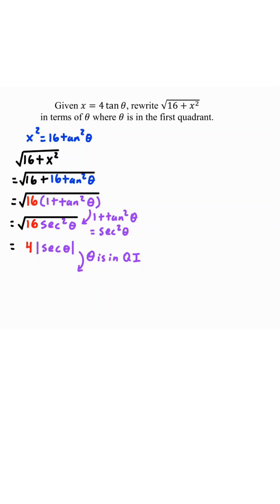However, since theta is in quadrant 1, then secant of theta is always positive, meaning the absolute value is pointless. So the absolute value of secant theta is just secant theta. This narrows down to 4 secant theta.